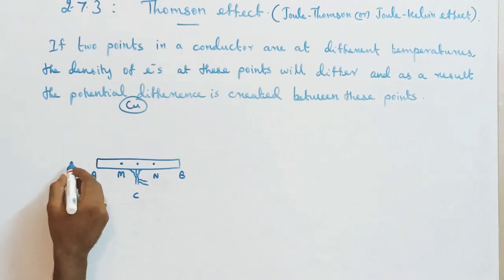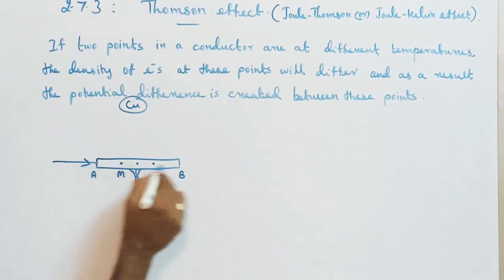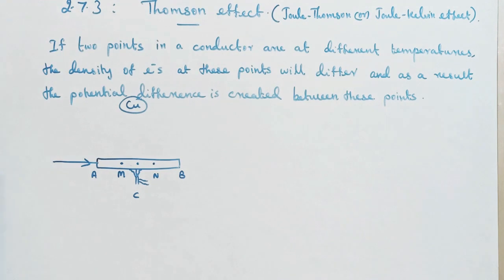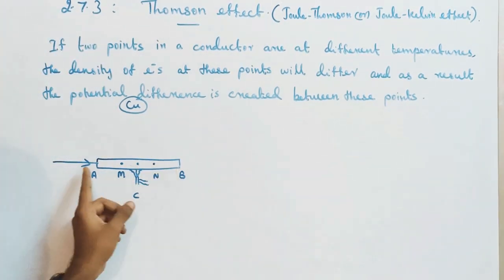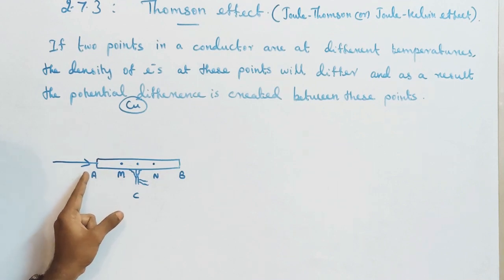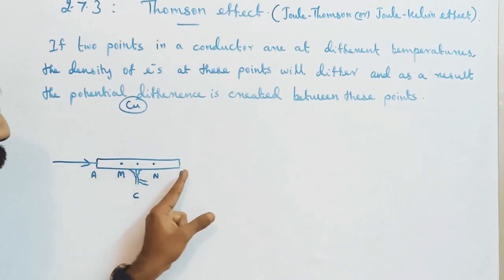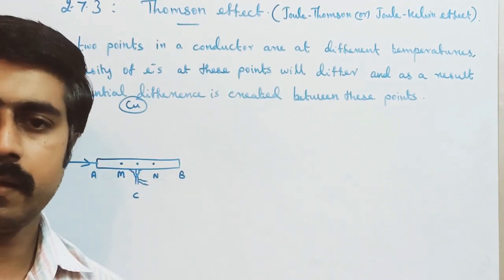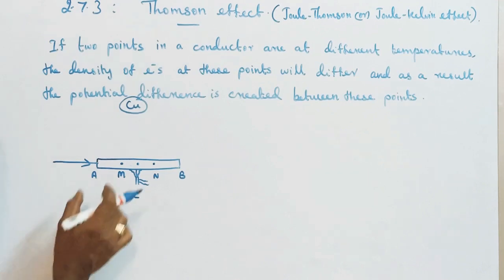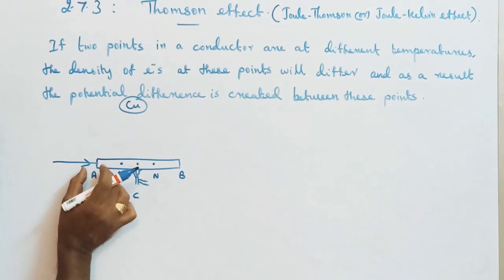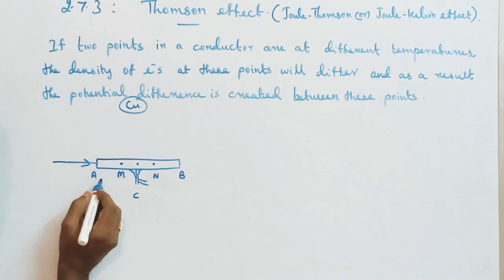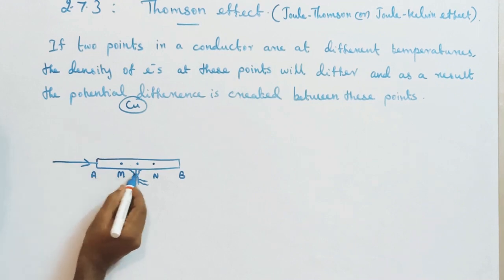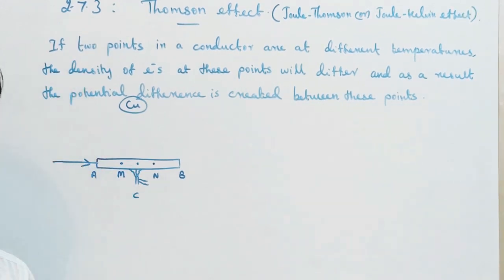Now allow the electric current to pass through the metal bar from point A to B.